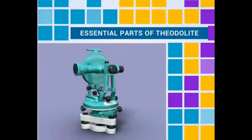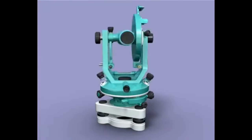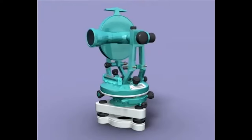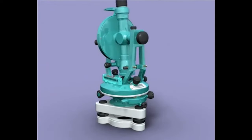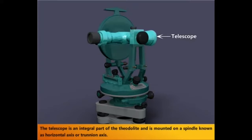Essential Parts of Theodolite. Let us see the essential parts of theodolite used for surveying. The telescope is an integral part of the theodolite and is mounted on a spindle known as horizontal axis or trunion axis.